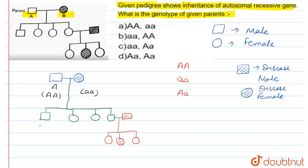We can mark the offspring genotypes like this: capital A small a, capital A small a, capital A small a, capital A small a. That's why in these offspring there is no disease. But this male is having small a small a. Why? Because small a small a represents disease, and capital A capital A represents normal.